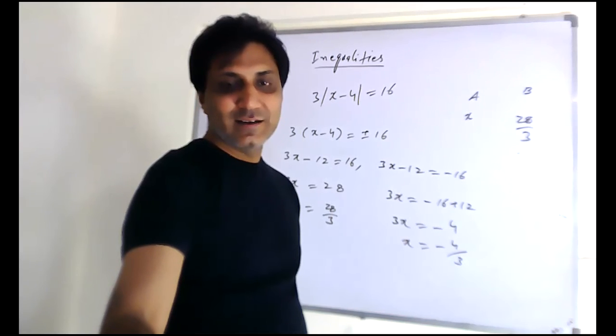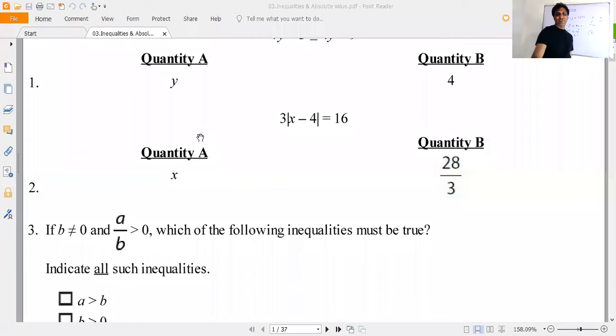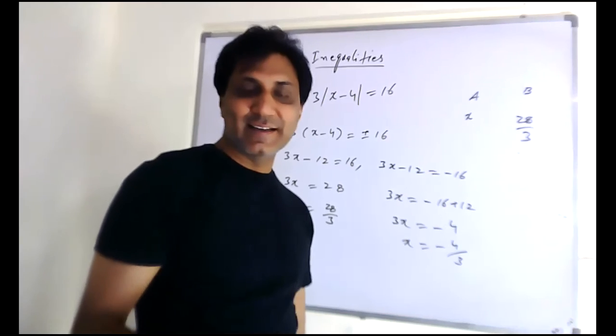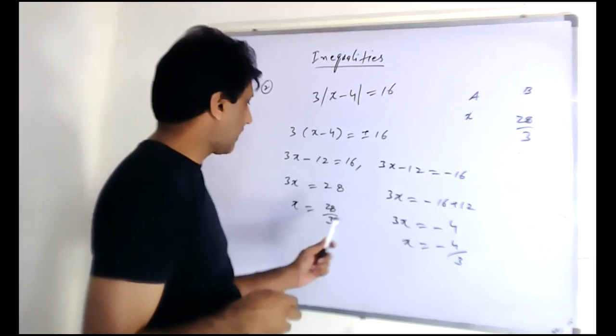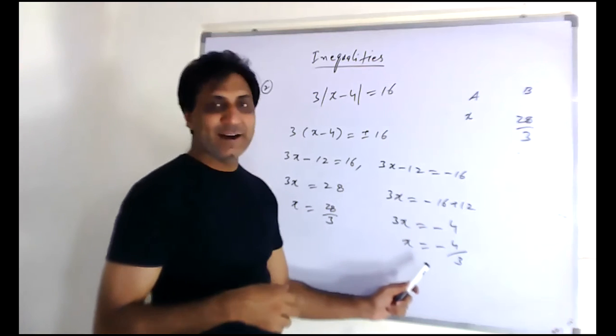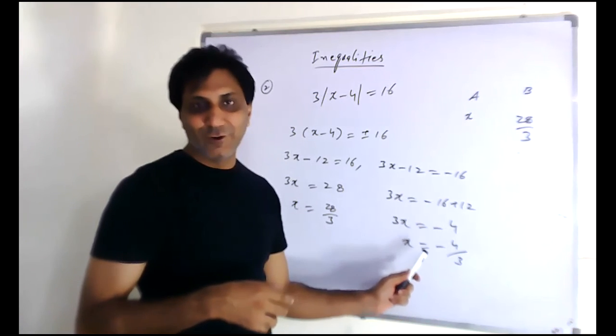Let me show you again. If the question specifies that x is positive, you would say x equals 28 over 3. But the question doesn't specify whether x is positive or negative. So when it doesn't specify, you have to take both values. When x is positive, it's 28 over 3, and when x is negative, it's negative 4 over 3.